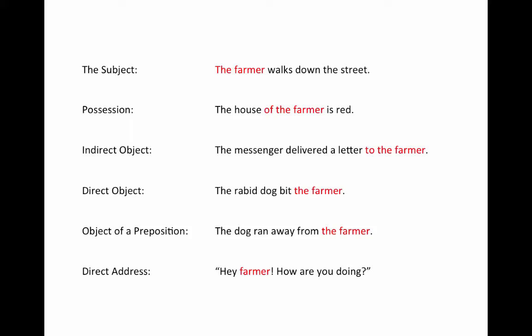A noun can be used in many different ways in an English sentence, so here are a few listed. It can be the subject of a sentence, the doer of the verb, as in 'the farmer walks down the street.' It can be used for possession — in English we use an apostrophe, but in Latin this is how we'll render it, so let's get used to seeing it this way: 'the house of the farmer' is read instead of saying 'the farmer's house.'